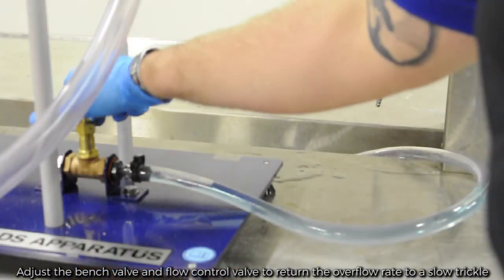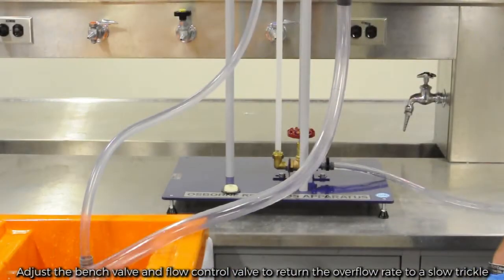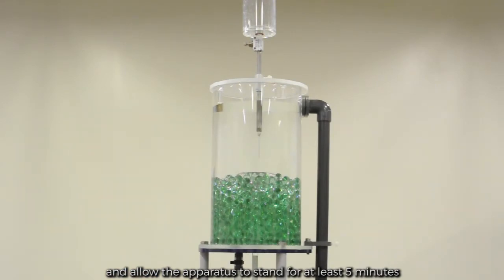Adjust the bench valve and flow control valve to return the overflow rate to a slow trickle and allow the apparatus to stand for at least five minutes.